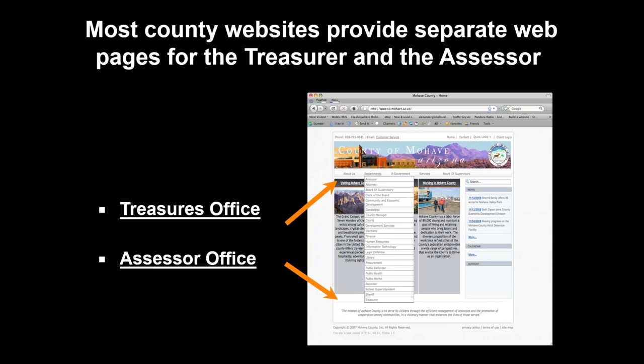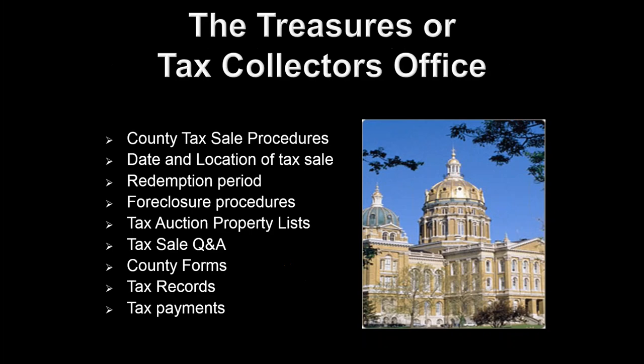Most county websites are going to provide two separate webpages for the treasurer's office and the assessor's office. In fact, some counties will have completely different websites — you'll click on the assessor and it takes you to their own website. Sometimes they'll just be different departments within the same website. Either way, the first thing we're going to look for is the treasurer's office and the assessor's office.